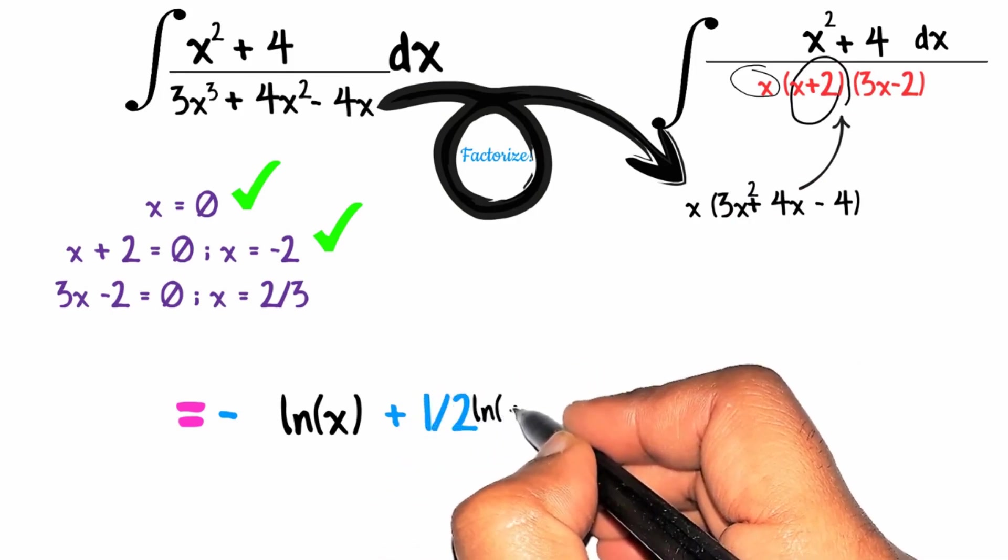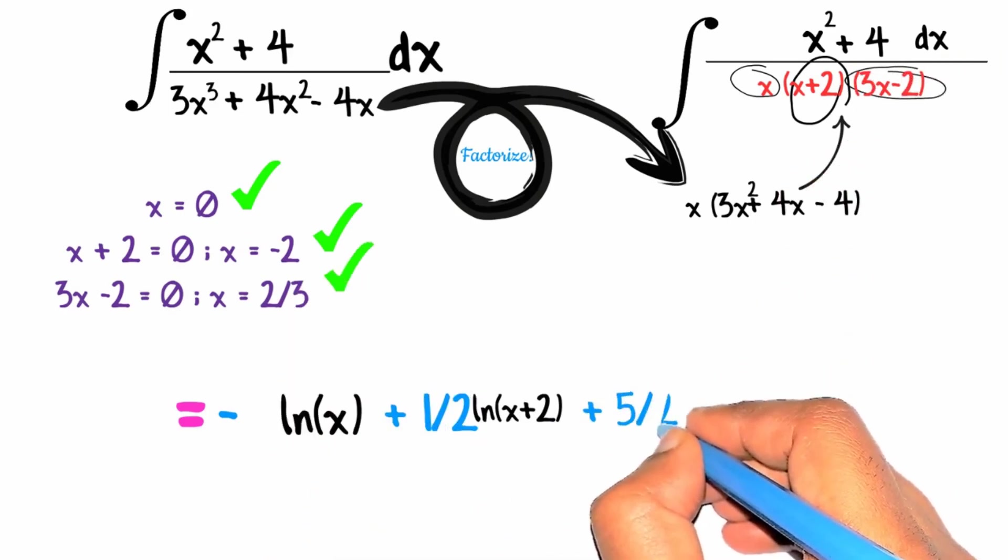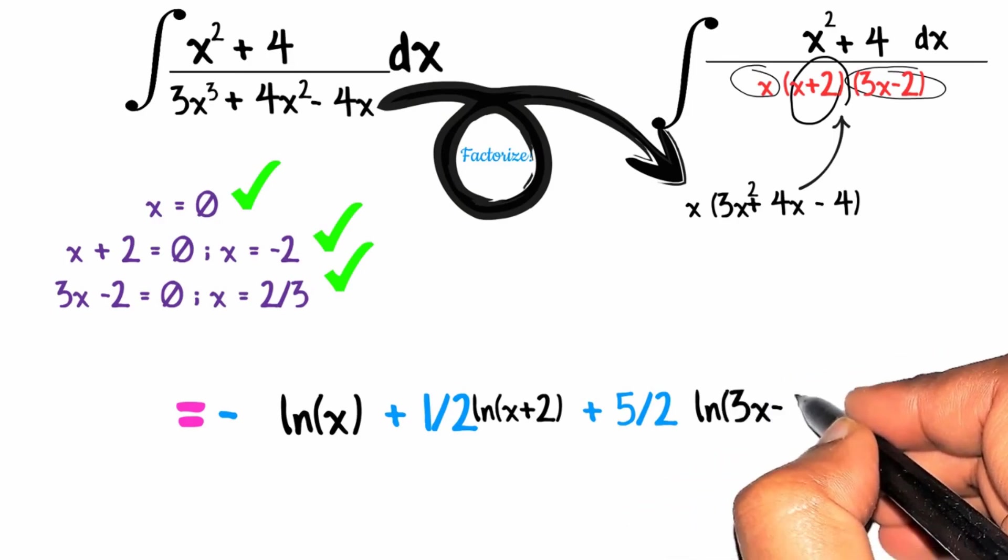In the same way solving for the third coefficient will give us 5 by 2 as the coefficient. And then we will write ln and then 3x minus 2. Then we will write plus c. So this will be our answer.